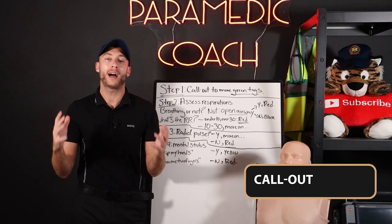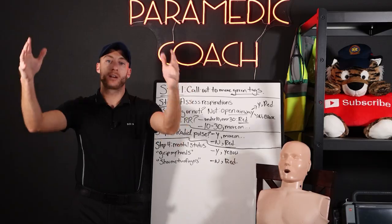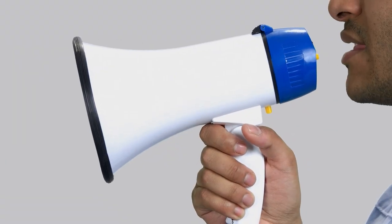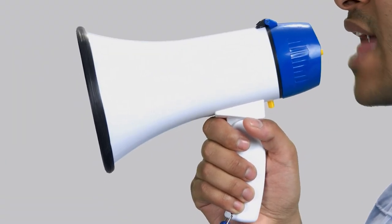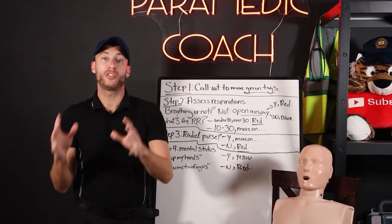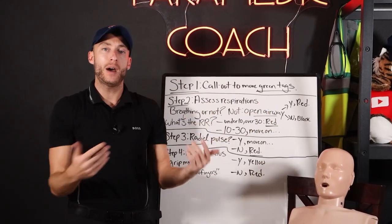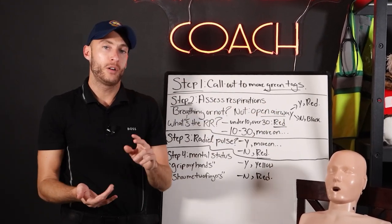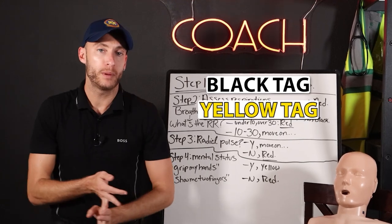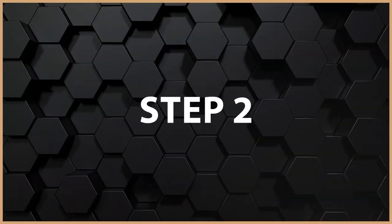Step one of START triage is to call out to the walking wounded. We use our megaphone and move patients who are able to walk to a designated area. If you're able to walk, move to this spot. Now we have our green patients settled, and we just need to figure out who's going to be black, yellow, or red — and that's where we move on to step two.